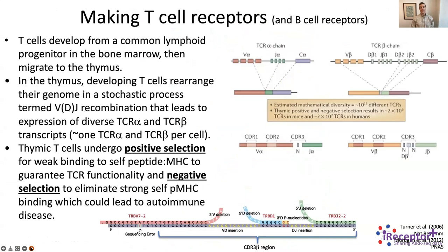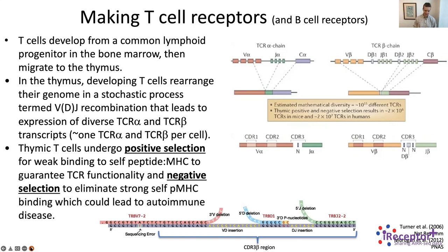How do we make T cell receptors? Full disclosure — I'm a mathematician by training, so my apologies to any immunologists in the audience. A lot of this action happens in the thymus, where developing T cells rearrange their genome in a stochastic process called VDJ recombination. This leads to the potential to express a vast diversity of TCR alpha and beta chains — typically one, sometimes two in-frame TCR alpha chains, and usually one in-frame TCR beta chain per cell. Those T cells are then positively selected for at least some minimal interaction with self-peptide MHC, and negatively selected for binding too strongly to self-peptide MHC.